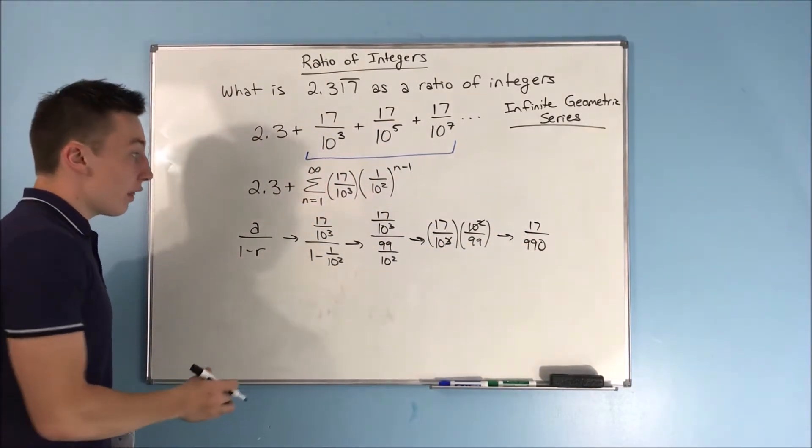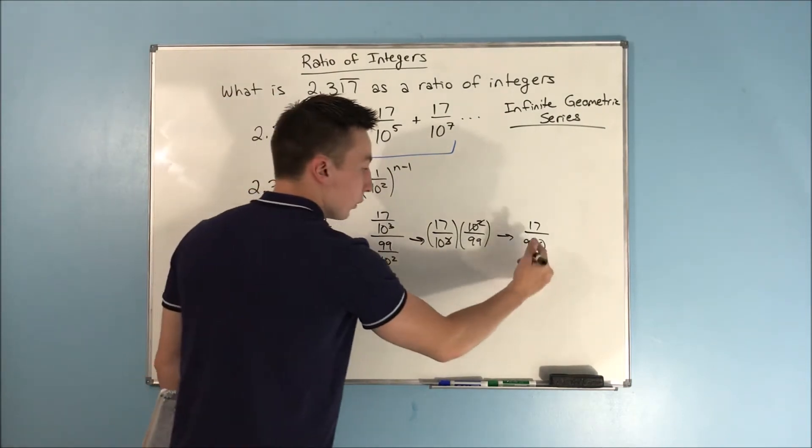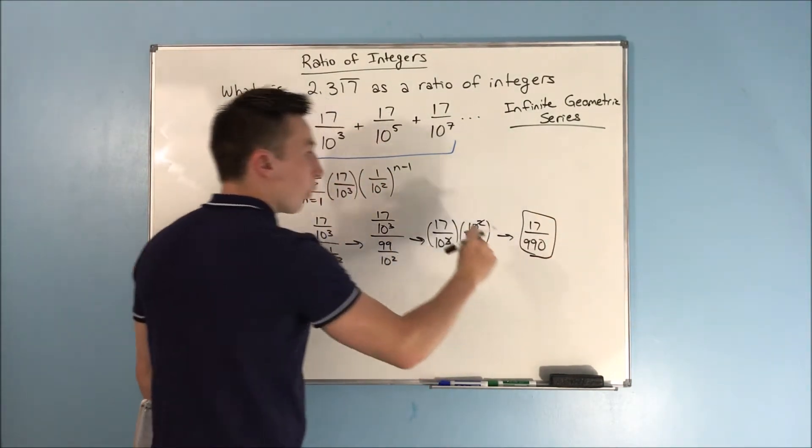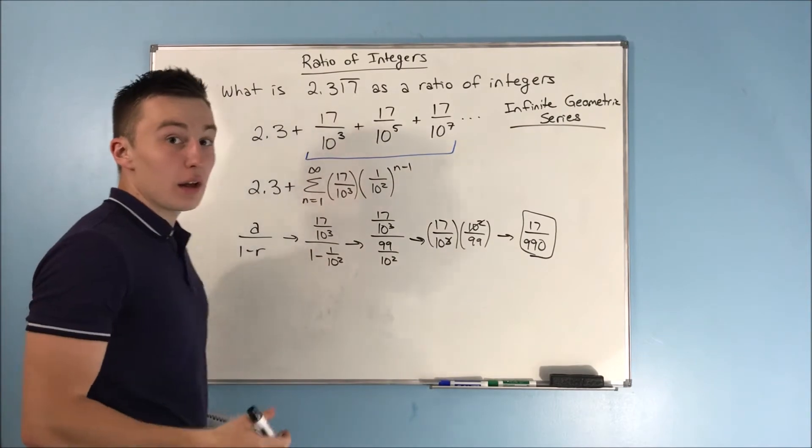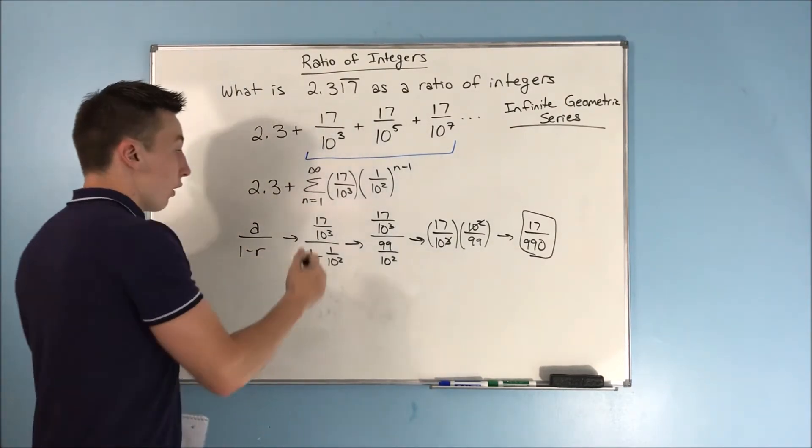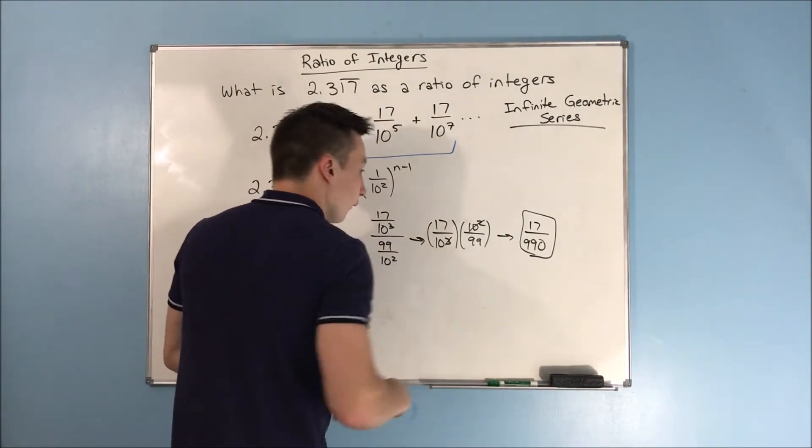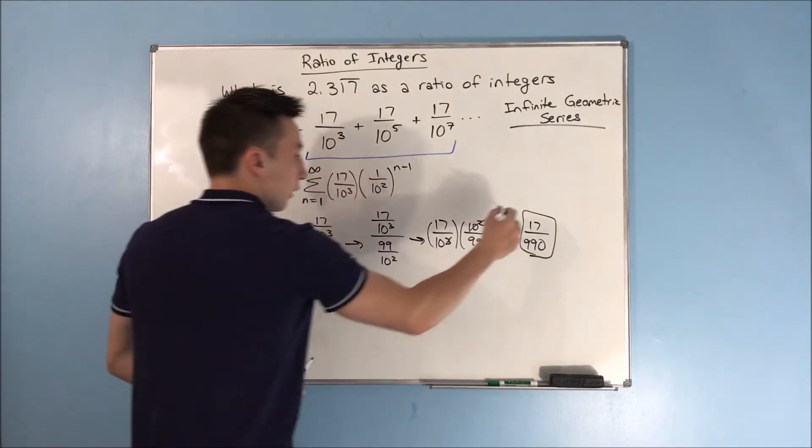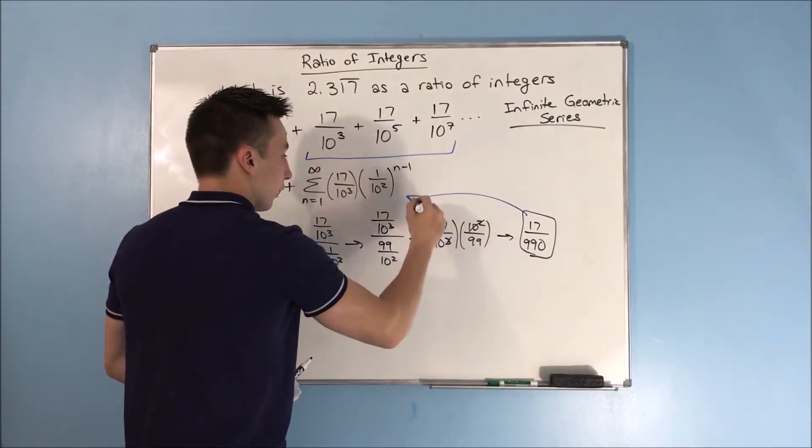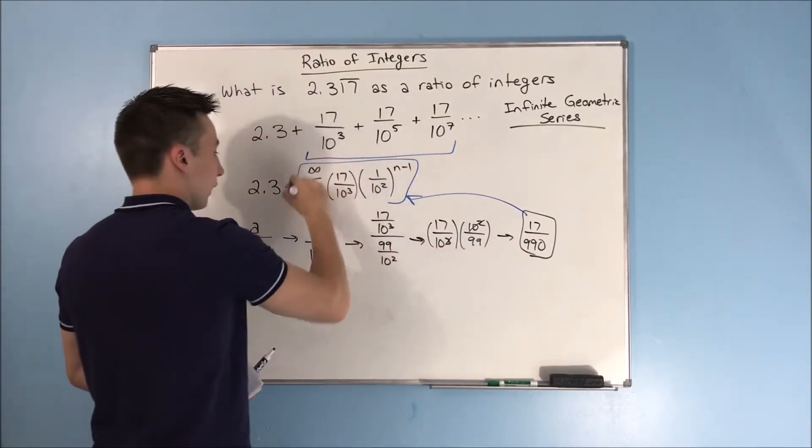That 17 over 990 is not your whole fraction, because you still have this 2.3 out there that you have to worry about. All we have just found is this piece right here.